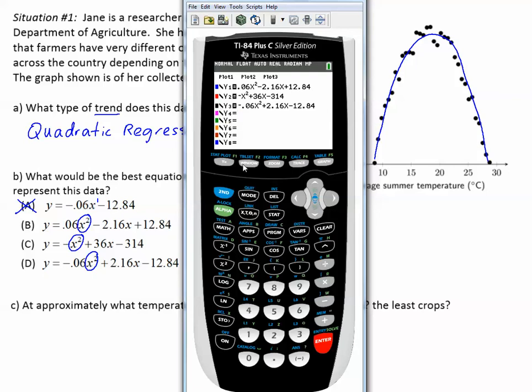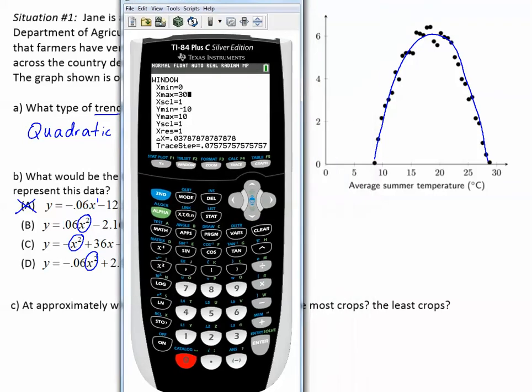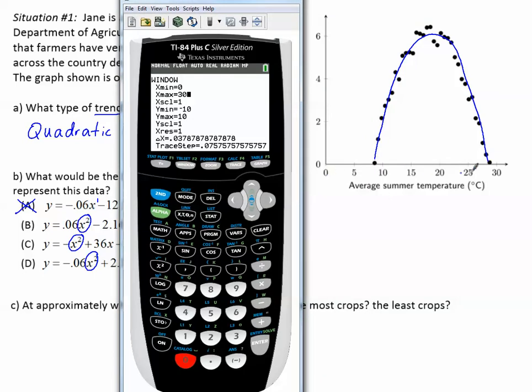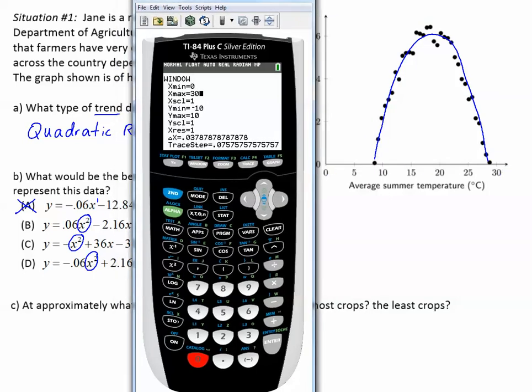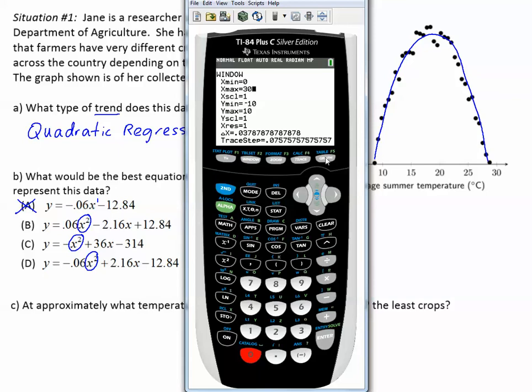So let's go to the window. We're going to hit the button that says window, and we're going to change the xmin to 0, and then change the xmax to 30, because our x-axis only goes from 0 to 30. Let's go ahead now and graph and see which one most closely resembles our graph, which of these equations.